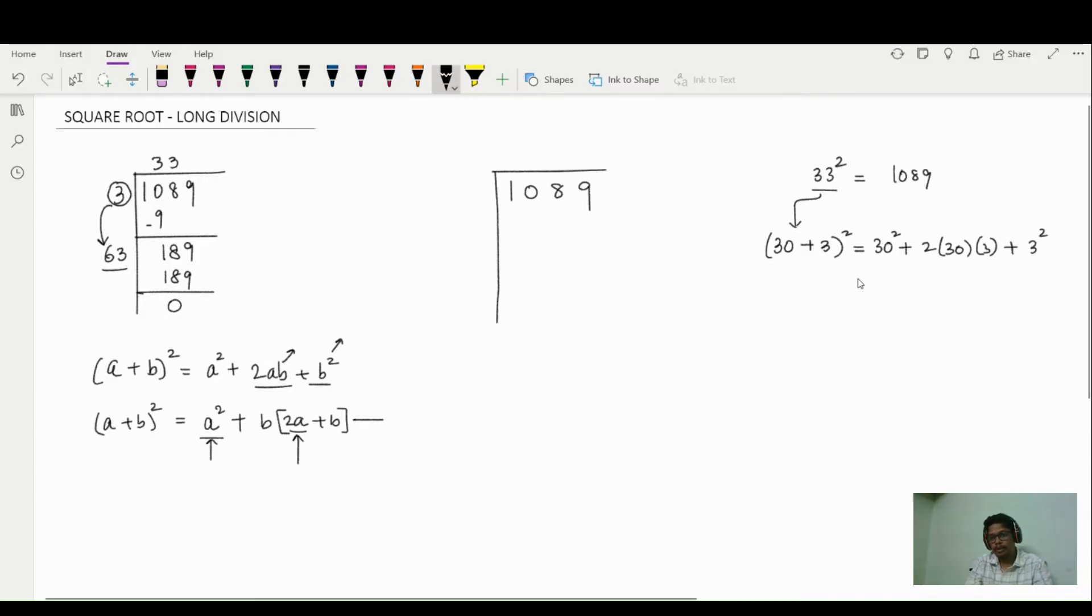Now we'll do the same grouping here. So it becomes 30² + what's common here. We have 3 common in both terms. So I take 3 and keep it outside. So I get 2(30) + 3.